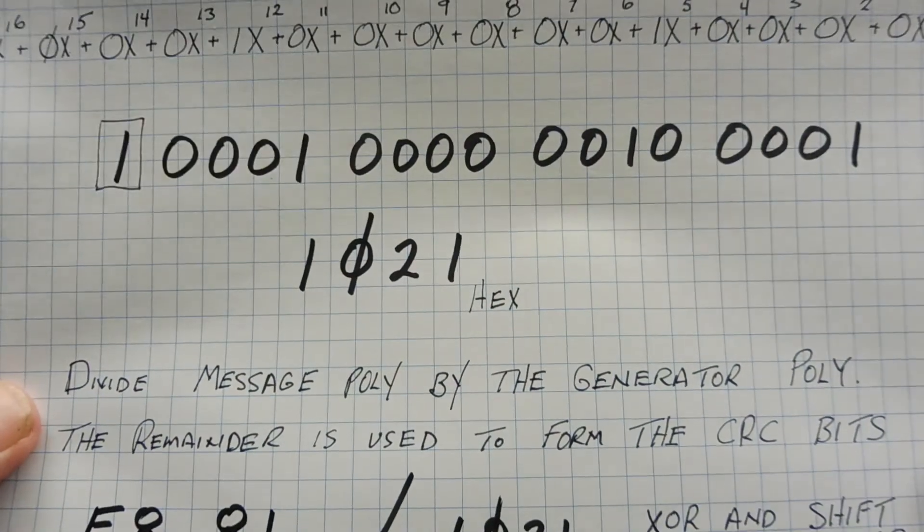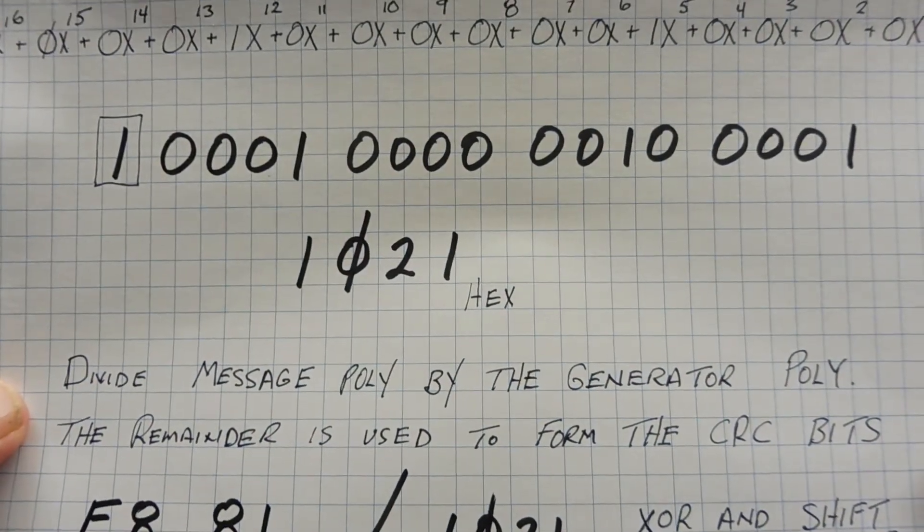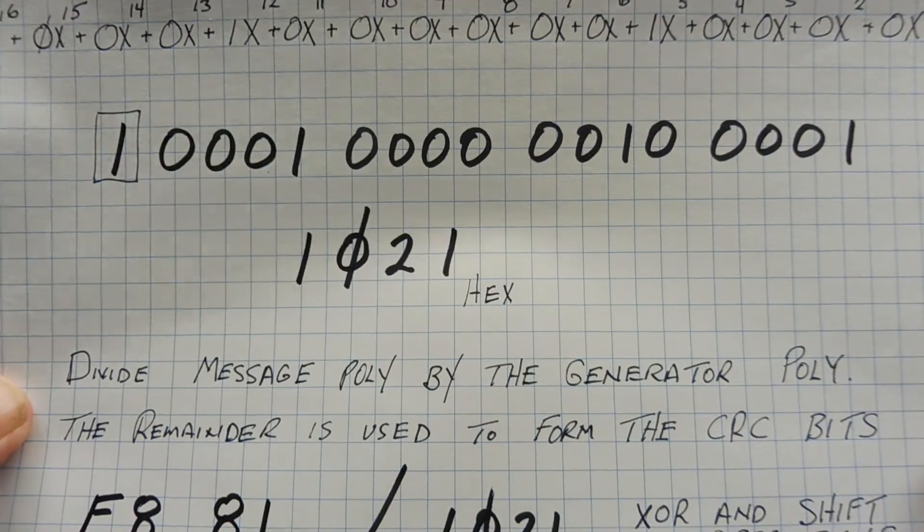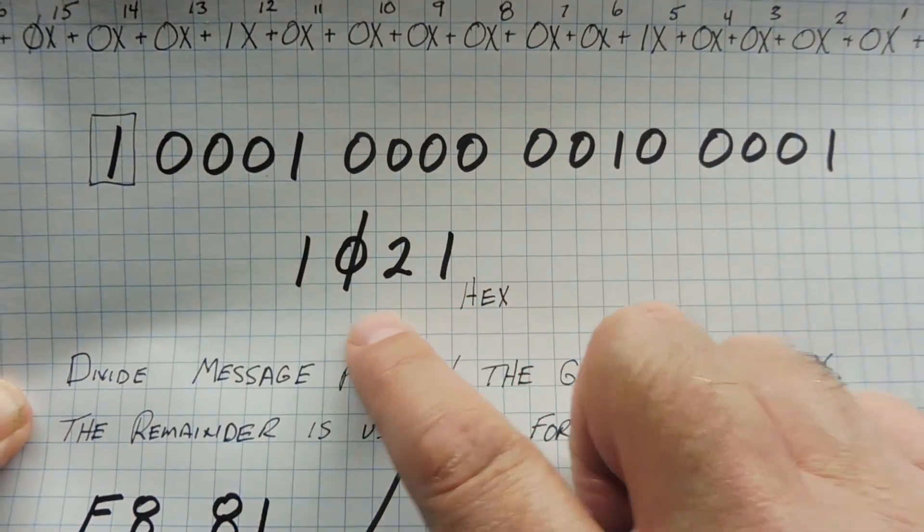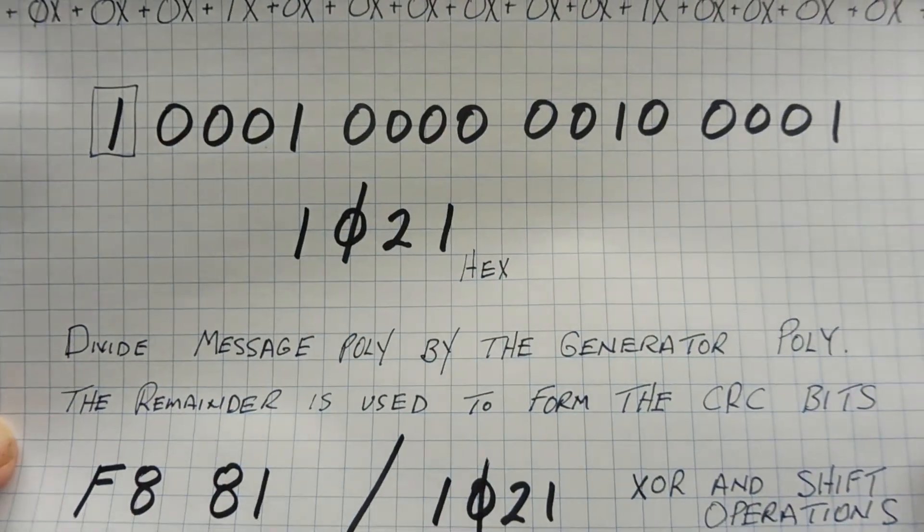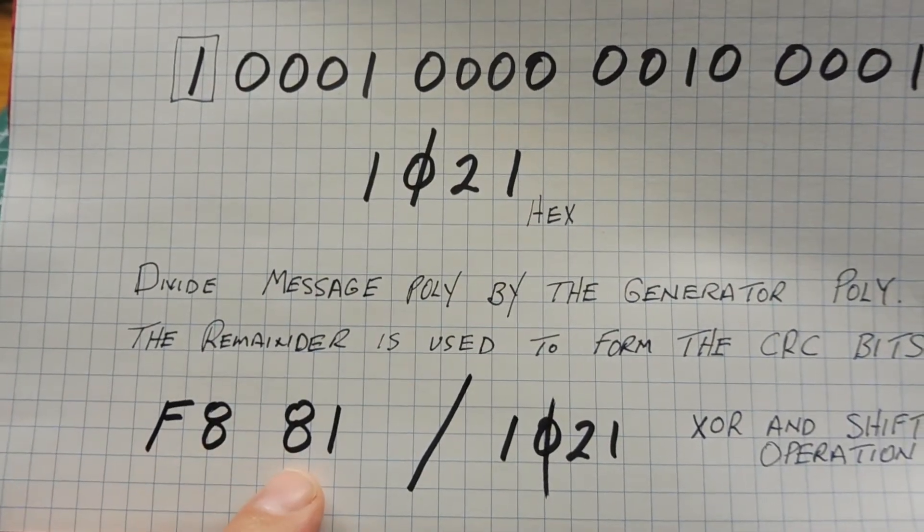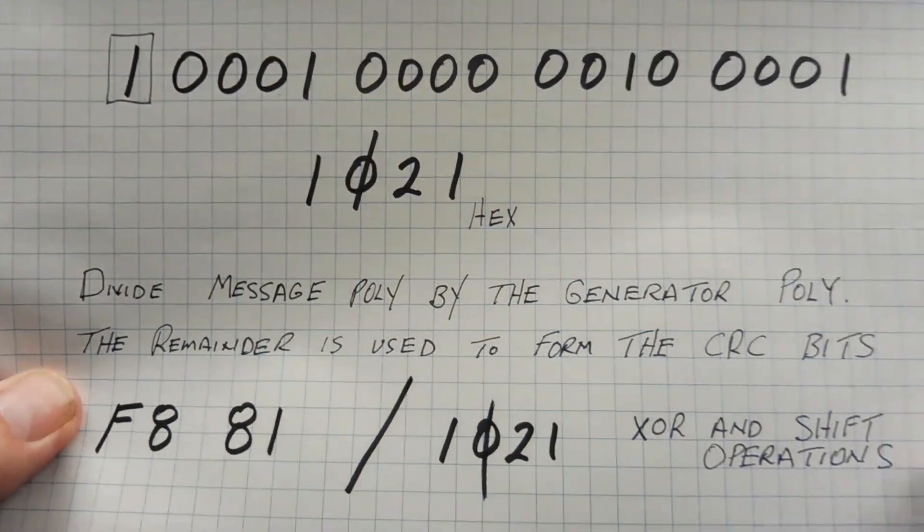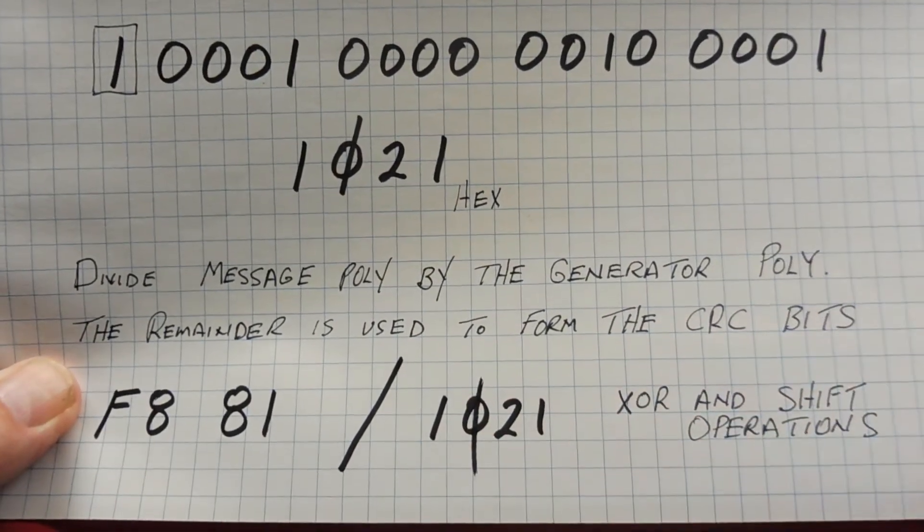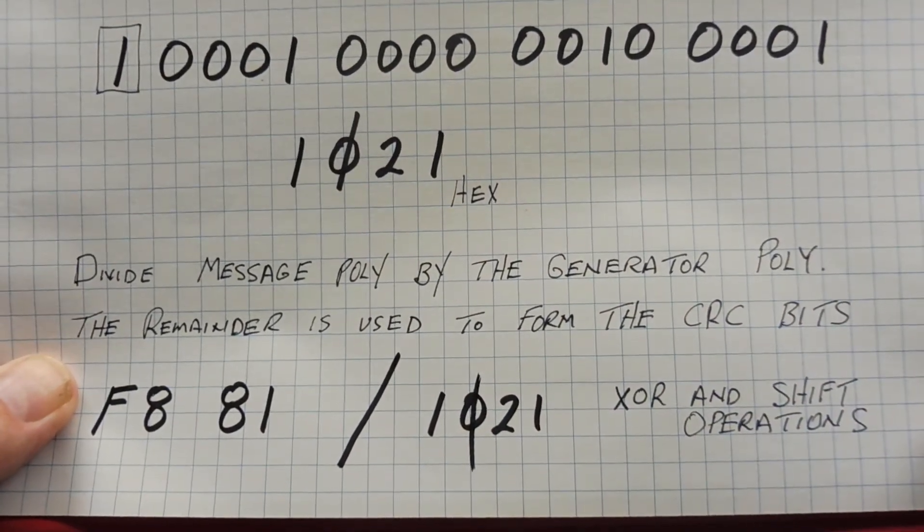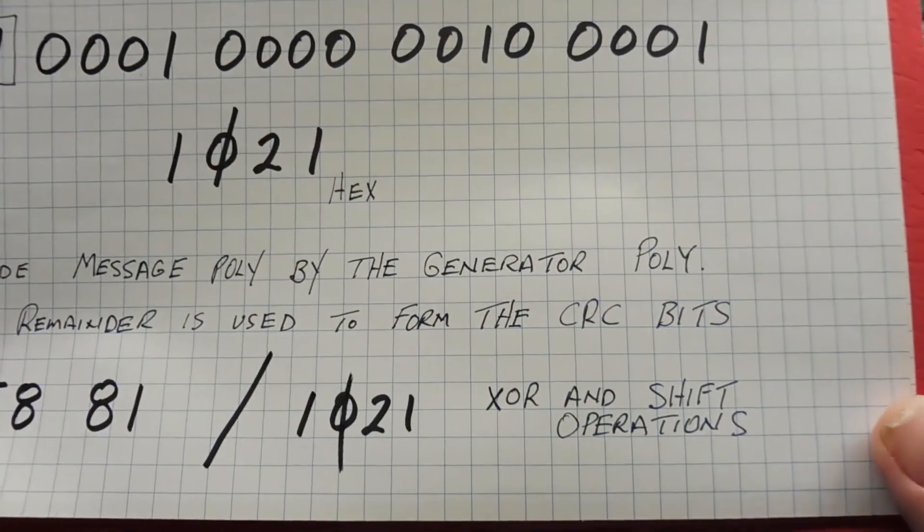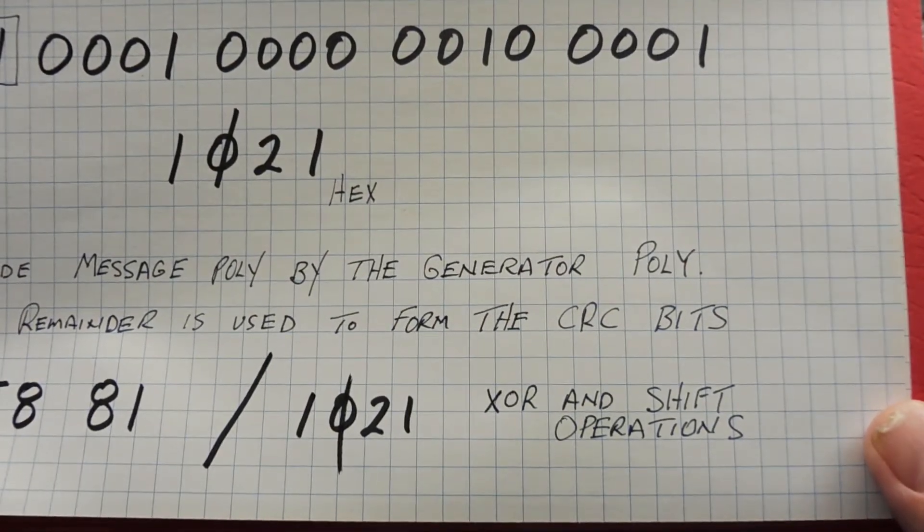So we divide the message polynomial, that's our data, by the generator polynomial, which we just saw above here, 1021. And the remainder is used to form the CRC bits. So here's our data, F881, that's our message, and we divide it by the 1021 hex, that's our generator. And to do that in a microcontroller, we use XOR, exclusive OR, and shift operations.